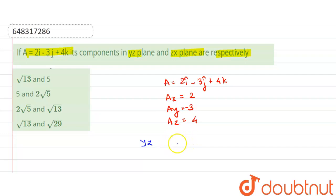we will have Ay squared plus Az squared, that is equal to minus 3 squared plus 4 squared, this is equal to 9 plus 16.